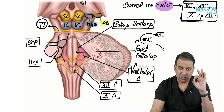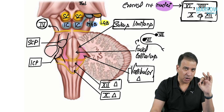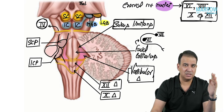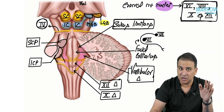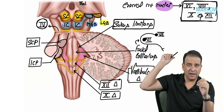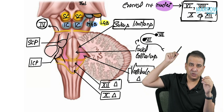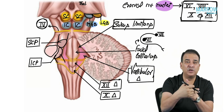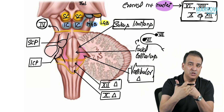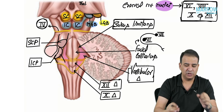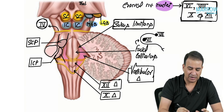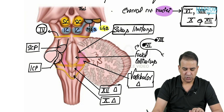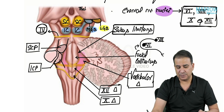So in summary: if the question asks which nuclei are present deep to the floor of the fourth ventricle, it's the sixth nucleus, eighth nucleus, tenth and twelfth. The sixth nucleus is surrounded by the facial nerve, so injury to the facial colliculus means the facial nerve gets affected first. That's the summary of the dorsal and ventral aspects of the brainstem.